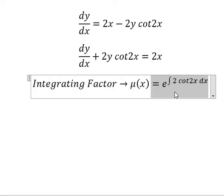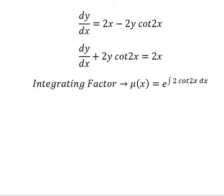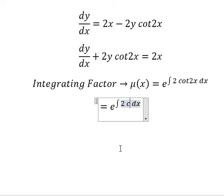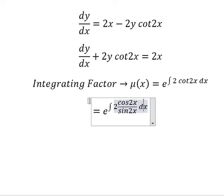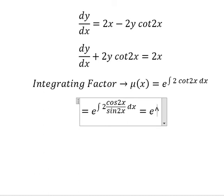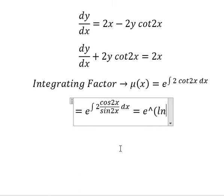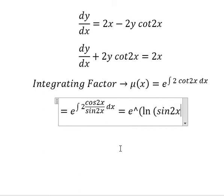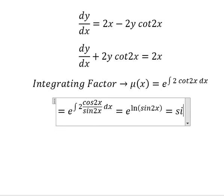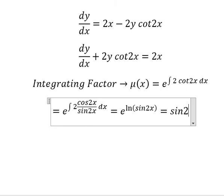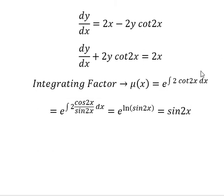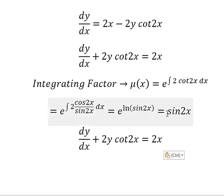And we know that this one we can rewrite as cos(2s) over sin(2s). The integration of this gives us ln of sin(2s), and we have sin(2s). That means we multiply both sides by sin(2s).